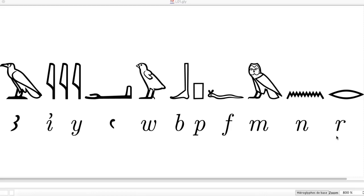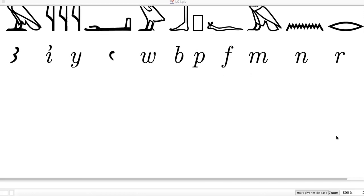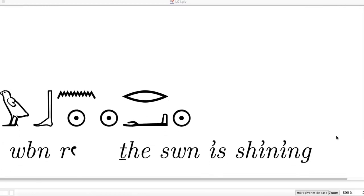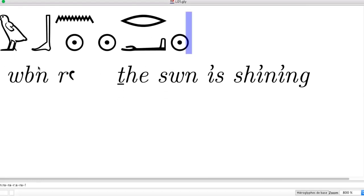To review a little bit more, we're going to try to read our first sentence in JSESH. So our first sentence starts with the quail, and the quail is W — so the sound is W.